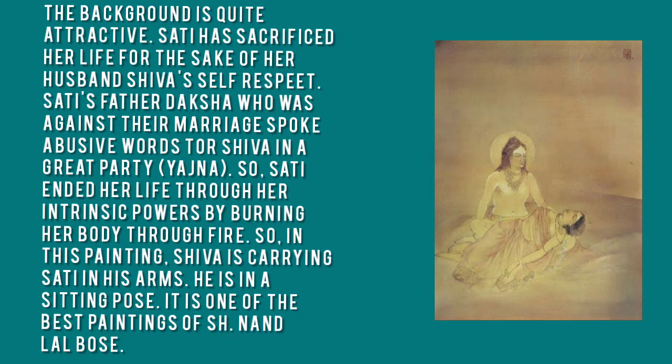Sati's father, Daksha, was against their marriage. He used abusive words against Shiva. At that time, Sati, unable to bear the insult to her husband, sacrificed her life. Shiva then held Sati in his arms, mourning her death.